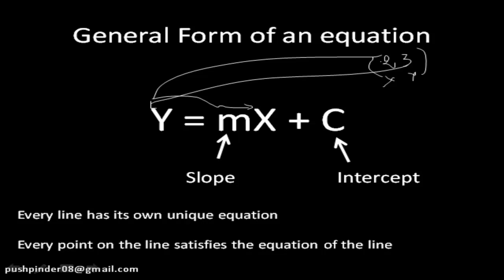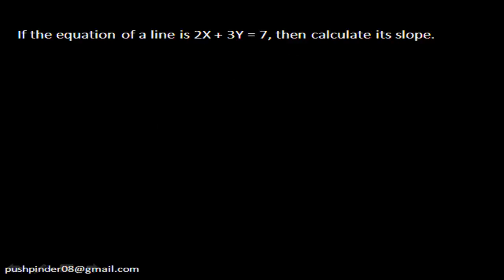This general form is more than sufficient for preparing for exams like GMAT, SAT, GRE, and CAT. This equation of a line is very important — every line has its unique equation and every point on the line satisfies the equation. Let's do one simple question. If the equation of the line is given, what is its slope? We have the equation 2x + 3y = 7. What I have to do is bring it to its general form, and from that I can easily calculate the slope and the intercept.